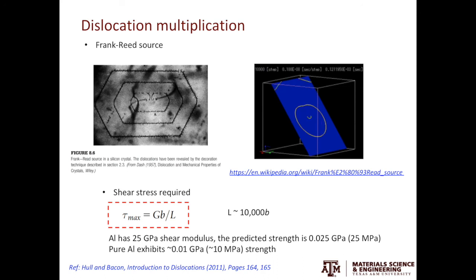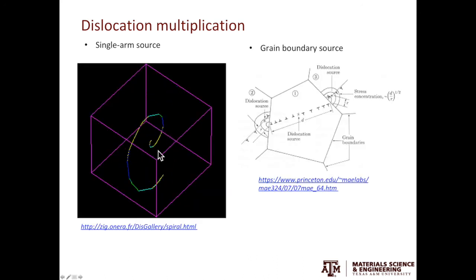In addition to the Frank-Reed source, there are other dislocation sources. The example on the left shows the single arm source which can be observed when deforming samples at a very small scale. In a polycrystalline material, grain boundaries can also act as dislocation sources. There are many mechanisms being proposed to explain how grain boundaries can act as dislocation sources. Here I will only focus on one of them.